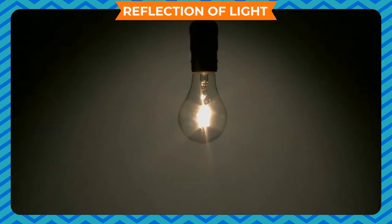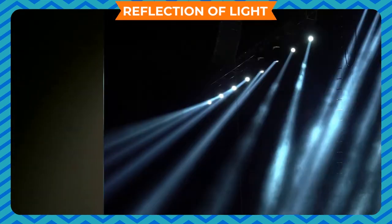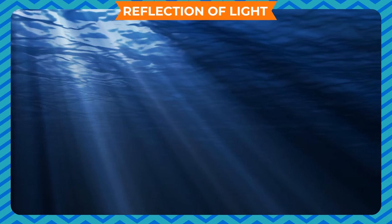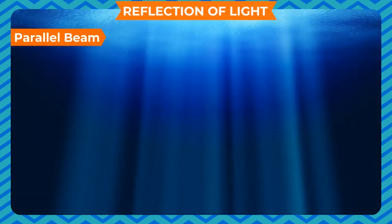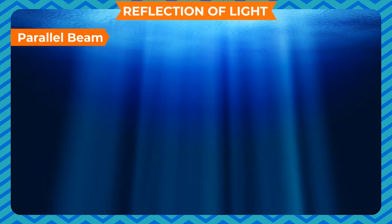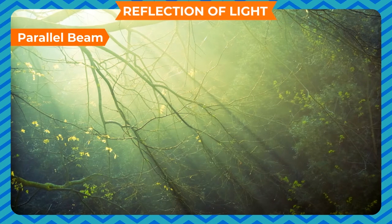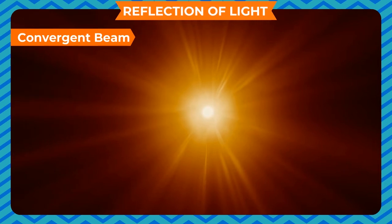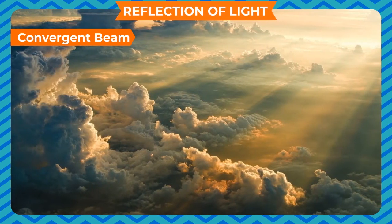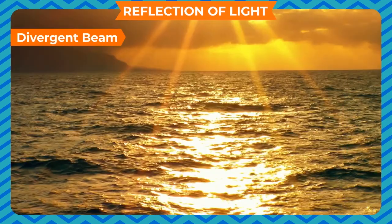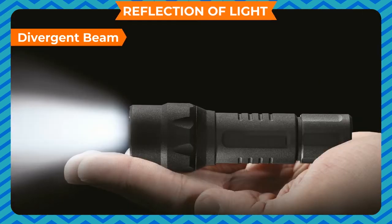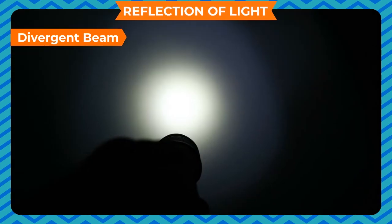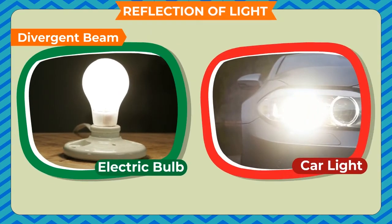The light emitted by these sources travels in a straight line. A narrow path of light represented by a straight line is called a ray of light. A thick ray of light is called a beam of light. It can be classified as: a parallel beam, where all light rays are parallel to each other; a convergent beam, which comes from a broad source and converges at a point; and a divergent beam, which comes from a small source and diverges outward — for example, light from a torch, electric bulb, or the front light of a car.